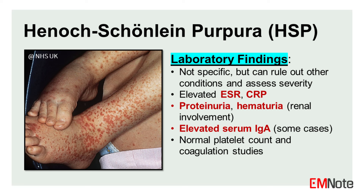Laboratory Findings. Laboratory tests are not specific for HSP but can aid in ruling out other conditions and assessing disease severity. Findings may include elevated inflammatory markers such as ESR and CRP, proteinuria or hematuria indicating renal involvement, elevated serum IgA levels in some cases, and normal platelet count and coagulation studies.